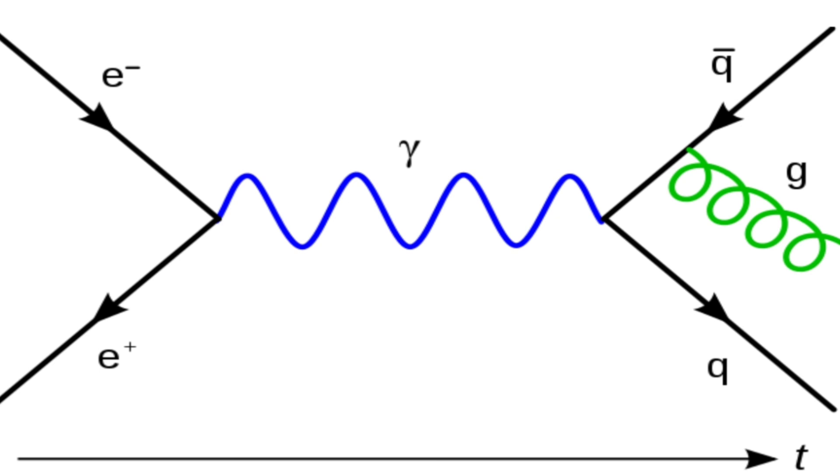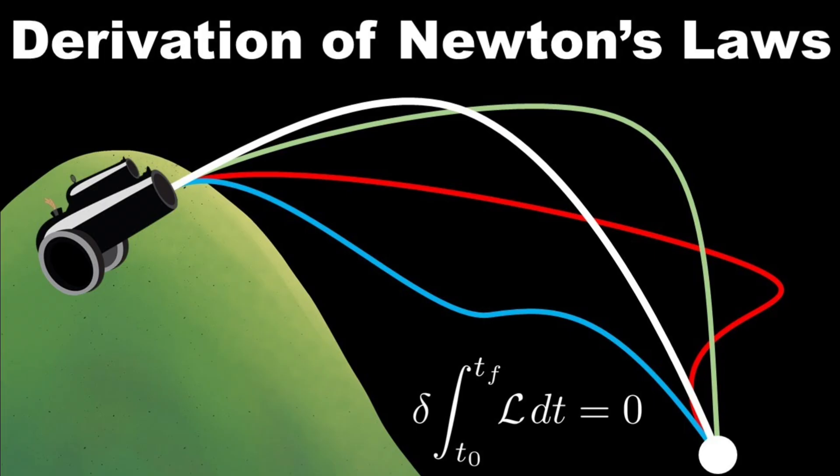QFT also uses a special principle called the principle of least action, which states that nature always chooses the path or the process that minimizes the action, which is a measure of the energy and time involved. QFT also uses a special technique called perturbation theory, which allows us to approximate the results of complicated calculations by adding up simpler ones.